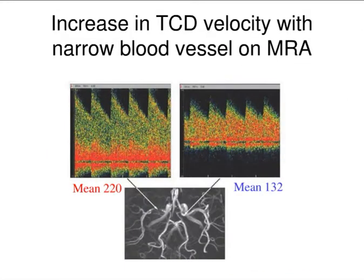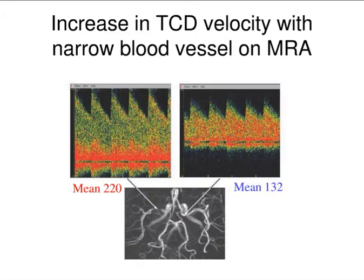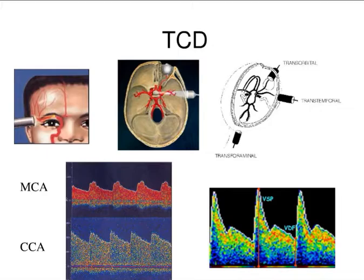Here is an example of vasospasm giving rise to very high flow velocities, where the mean velocity on the left is 220 centimeters per second. Normally, a normal value in the middle cerebral artery is roughly 40 to 60 centimeters per second. So a very high velocity indicates narrowing of the vessels, and you can see on the imaging at the bottom of the slide an example of a study where the vessel is actually quite narrow.